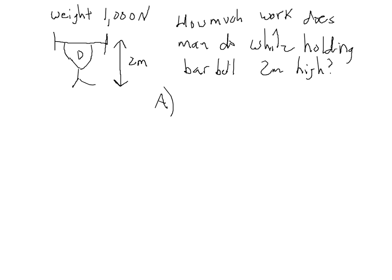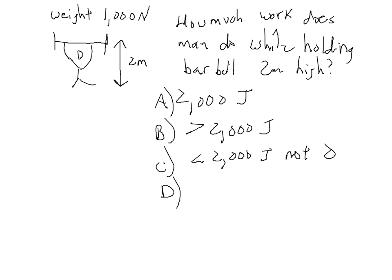So you may think that it is going to be 2,000 joules. Perhaps it is greater than 2,000 joules. It may be less than 2,000 joules, but not zero. Or it may be zero. Pause the recording for a moment. Think about what you think the correct answer is and see if you can sort of explain it to yourself. And then when you're ready to hear the explanation, unpause the recording to see if you were right.